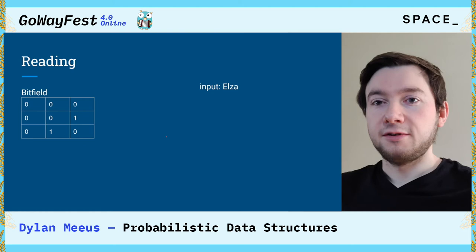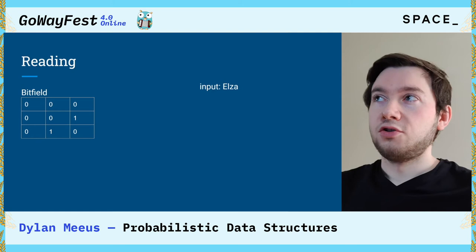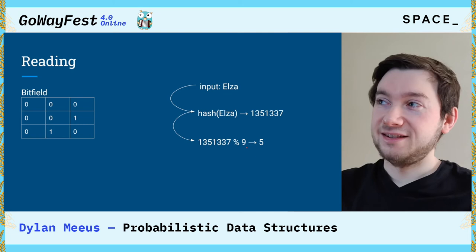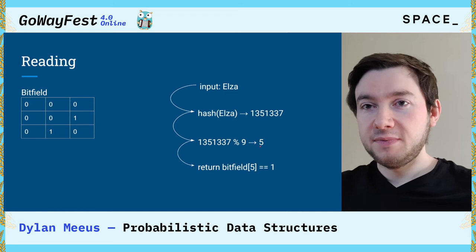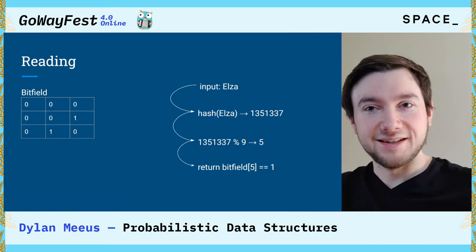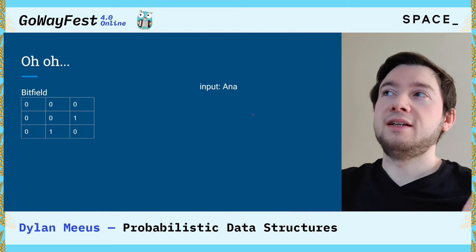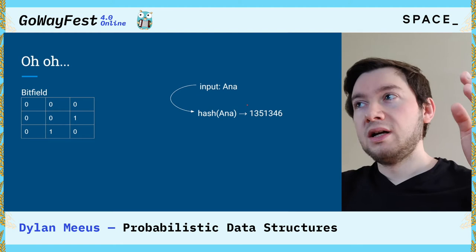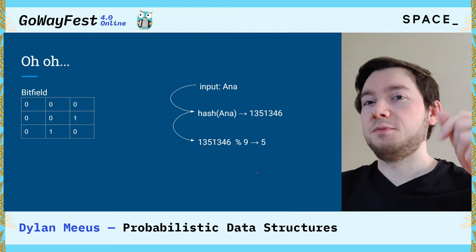To read from the bit field, it's a very analogous operation. We take our input Elza, hash it — this gives us the same number as before — do modulo the bit field size, get index five, and instead of writing, we return whether it is one or not. If it is one, the username is taken. But let's say we want to enter Anna. We hash the value, do modulo nine, and this gives us the same index as before — five — which was already taken by Elza.